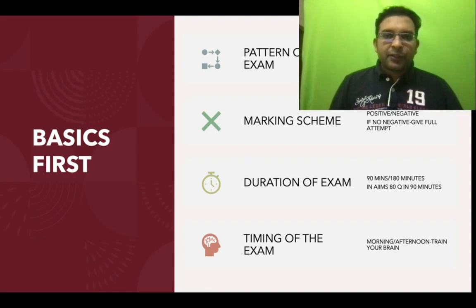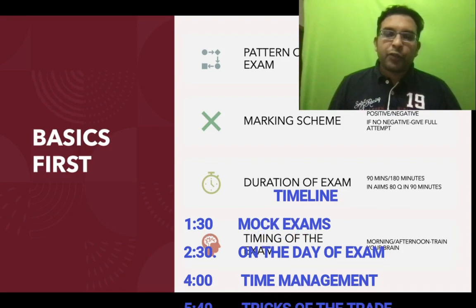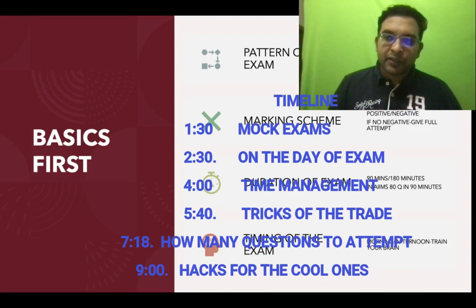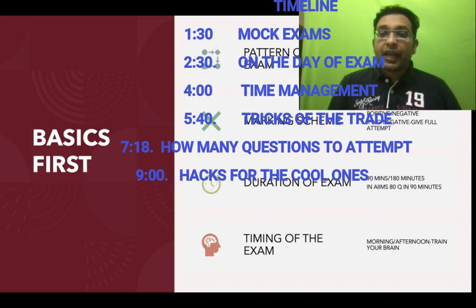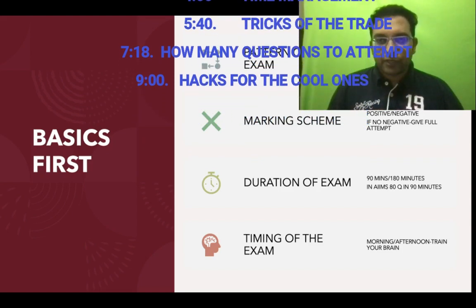Go by the basics first. Pattern of the exam - always see whether you have a 4 choice or 5 choice MCQ. And marking scheme, whether you have negative marking. If it's 1/3rd negative, 1/4th negative, or 1/5th negative. And if not, if you don't have negative marking, give a full attempt for that exam.